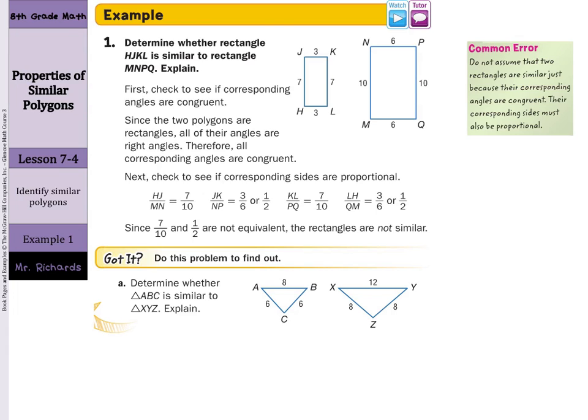So we need to check to see if the side lengths are proportional. HJ is 7 and that lines up with MN is 10, so that's 7 tenths. JK is 3 and NP is 6, which is 3 over 6, so that's 1 half. And right there you can stop. We have a ratio that's not congruent, and so the rectangles are not similar. Since 7 tenths and 1 half are not all equal to each other, the rectangles are not similar.